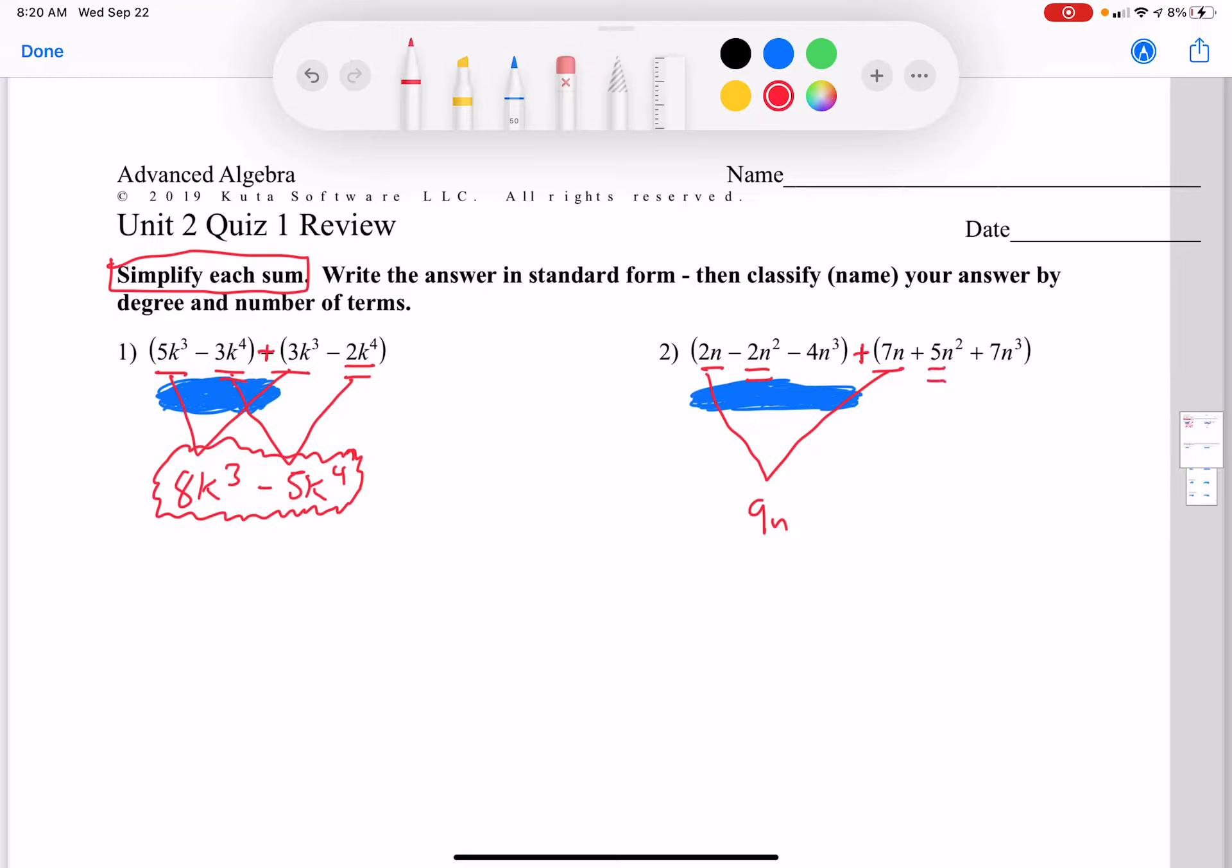Negative 2n squared plus 5n squared is 3n squared. Negative 4n cubed plus 7n cubed is 3n cubed. So we have simplified it, but that doesn't mean we're done.